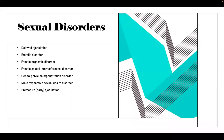Hi everybody. Let's talk about sexual disorders and gender dysphoria. The sexual disorders included in the DSM are delayed ejaculation, erectile disorder, female orgasmic disorder, female sexual interest and arousal disorder, genitopelvic pain penetration disorder, male hypoactive sexual desire disorder, and premature or otherwise early ejaculation.